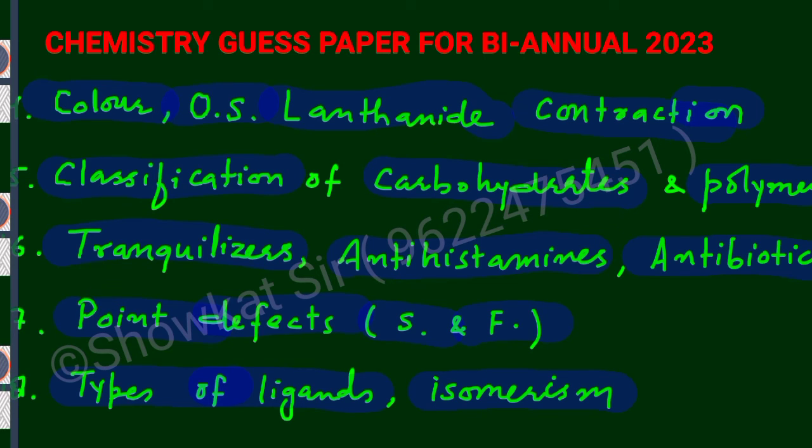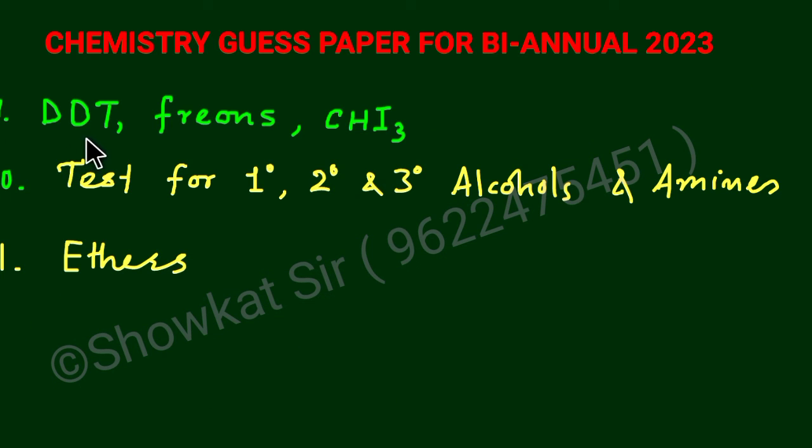Then next you will study here the environmental effect and uses of these DDT, freons, the chlorofluorocarbons what we call as CFCs, similarly the iodoform. And then the very important is the test, that is the identification for primary, secondary, and tertiary alcohols as you know by Lucas test, and similarly we are having also the test for amines. We are having test for differentiating primary, secondary, and tertiary alcohols by Lucas test, and similarly we are having Hinsberg test for these amines: primary, secondary, and tertiary amines. So I hope that you will study this identification of primary, secondary, and tertiary alcohols as well as the identification of primary, secondary, and tertiary amines. And then you will also study the preparation and property of ethers, particularly the Williamson's ether synthesis.